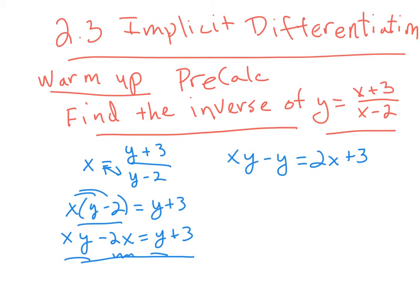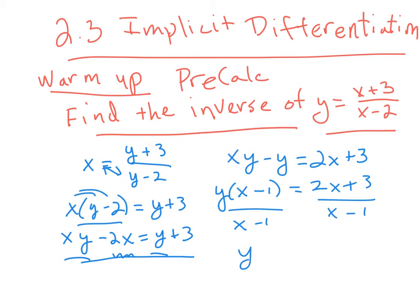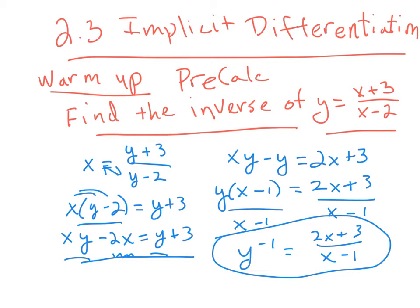How do I solve for y? This is the key: factor out the y. So y times (x minus 1) equals 2x plus 3. Divide both sides by (x minus 1), and the inverse is y equals (2x plus 3) over (x minus 1). The key is getting all your y terms on one side, factoring out the y, and then solving for it. We're going to do the same thing in implicit differentiation.